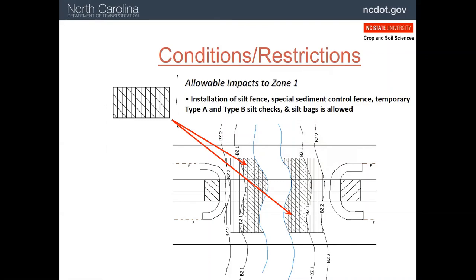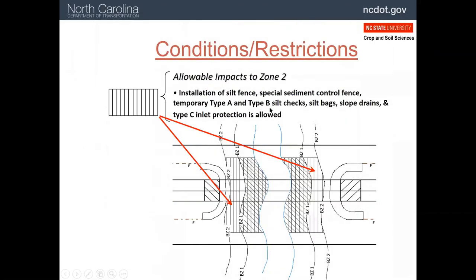The other type of disturbance in the buffers is the allowable impacts. Here's zone one with cross hatching — a slightly different pattern — to show what kinds of things can be put in here. Remember, these are all allowable inside but they are temporary and should be removed. And then over into zone two, we've got temporary measures, but we've added slope drains and type C storm drain inlet protection. All these will be removed once the bridge is completed.